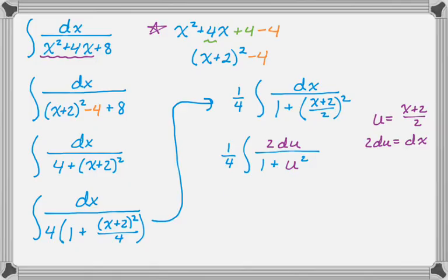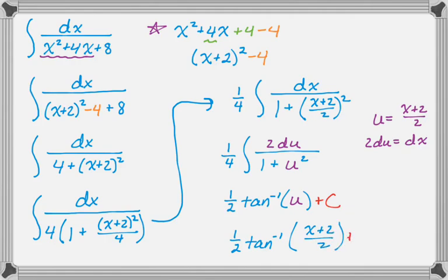So 2 du, 1 plus u squared. And the 2 and the 1 fourth cancel down to 1 half. And then it's just arctan or tan inverse of u plus c. But then u is x plus 2 over 2. And we get that plus c. And we're done.